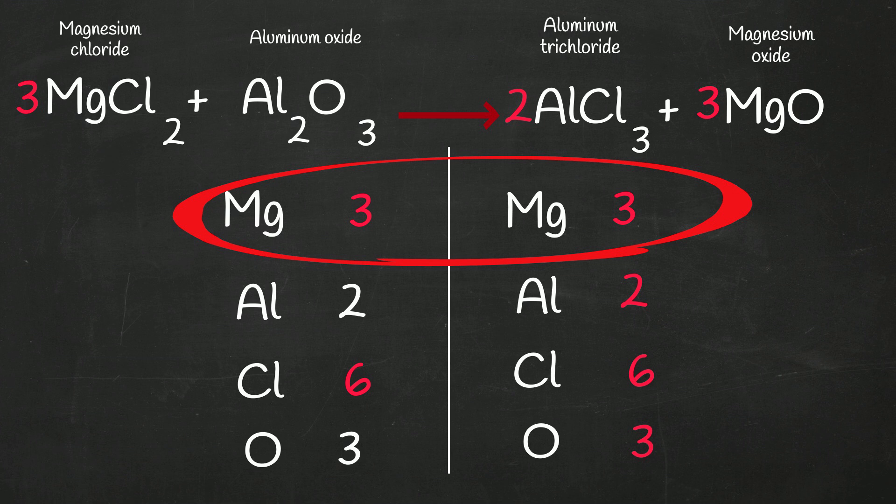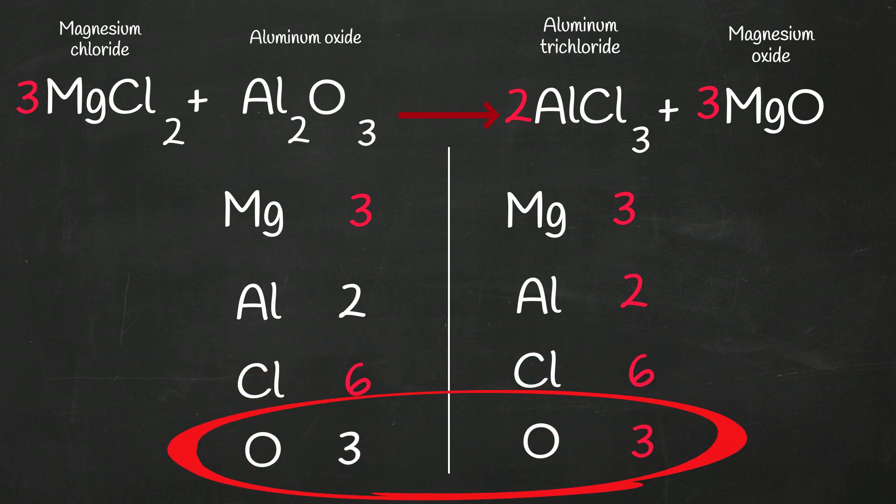So magnesiums, three, three, aluminums, two, two, chlorines, six, six, and oxygens, three, three. I hope that was helpful when balancing chemical equations.